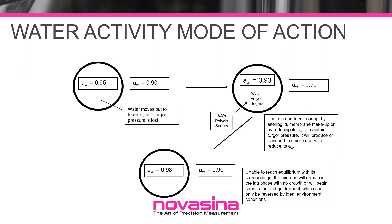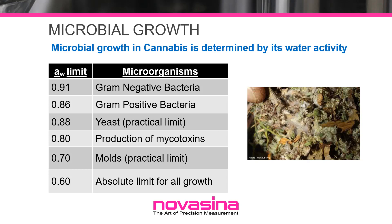Each microorganism has an ideal internal water activity and their ability to reproduce and grow depends on maintaining that water activity. When a microorganism encounters an environment where the water activity is lower than their internal water activity, they experience osmotic stress and begin to lose water to the environment, since water moves from high water activity to low water activity. This loss of water reduces turgor pressure and retards normal metabolic activity. To continue reproducing, the organism must lower its internal water activity by concentrating solutes internally. The ability to reduce its internal water activity using these strategies is unique to each organism, giving each microorganism a unique limiting water activity below which they cannot grow.